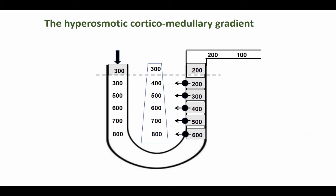I think you can imagine where we're going now. This process is going to continue until eventually we're going to have an interstitium that is hyperosmolar. In humans it can be as high as 1000 to 1200 milliosmoles.